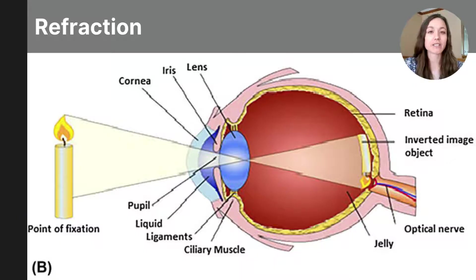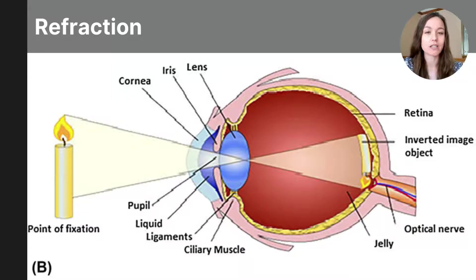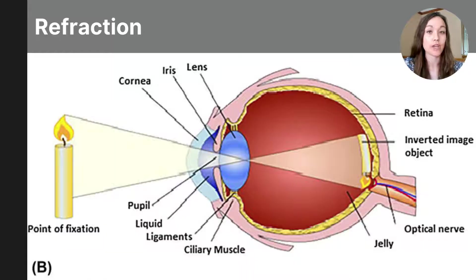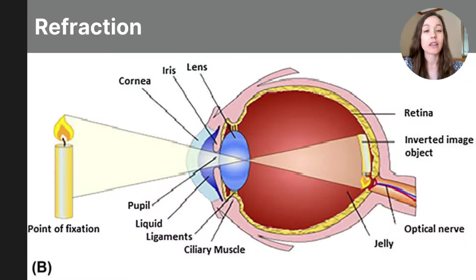Refraction of the eye causes light rays to bend as they pass through the cornea and lens, focusing them onto the retina in the back of the eye. Due to this bending, the image formed on the retina is flipped upside down and reversed left to right. You can see this represented in the diagram on the screen — notice how the candle is flipped upside down as it passes through the eye onto the retina. The brain processes and flips the image back to its correct orientation.